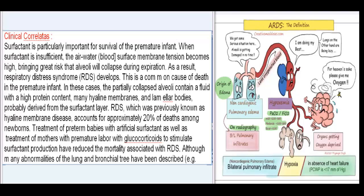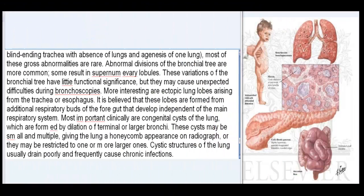Although many abnormalities of the lung and bronchial tree have been described — e.g., blind-ending trachea with absence of lungs and agenesis of one lung — most of these gross abnormalities are rare. Abnormal divisions of the bronchial tree are more common; some result in supernumerary lobules. These variations have little functional significance but may cause unexpected difficulties during bronchoscopies. More interesting are ectopic lung lobes arising from the trachea or esophagus, believed to be formed from additional respiratory buds of the foregut. Most important clinically are congenital cysts of the lung, formed by dilation of terminal or larger bronchi, which may be small and multiple, giving the lung a honeycomb appearance on radiograph, or restricted to one or more larger cysts. Cystic structures of the lung usually drain poorly and frequently cause chronic infections.